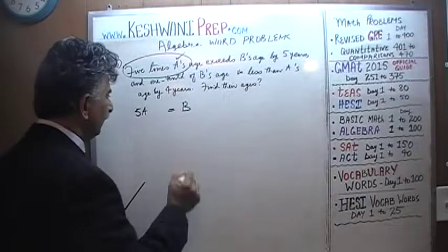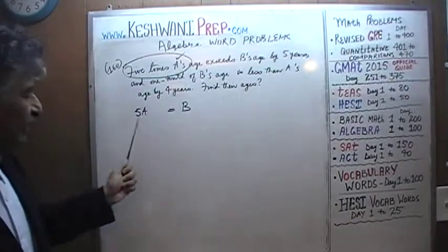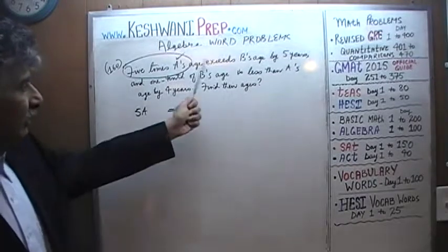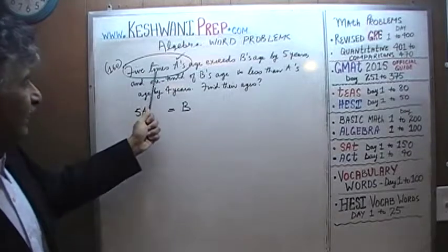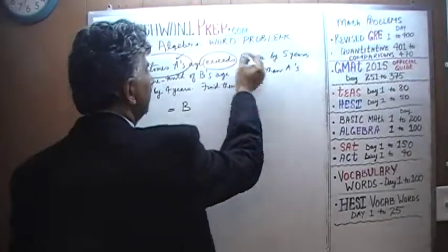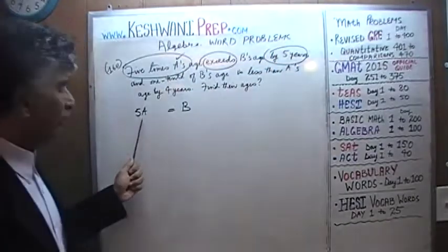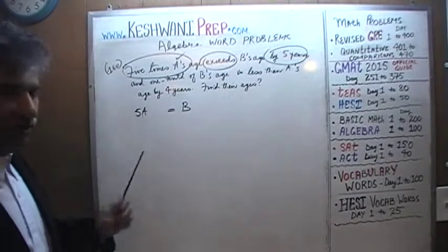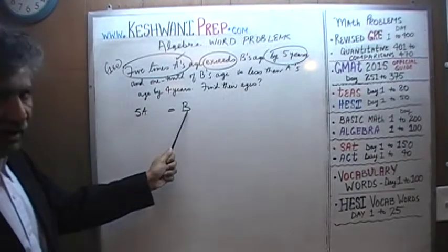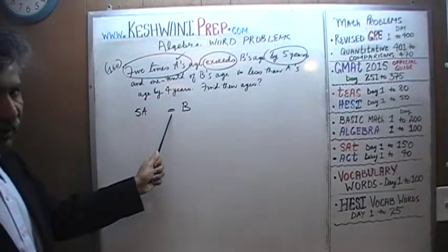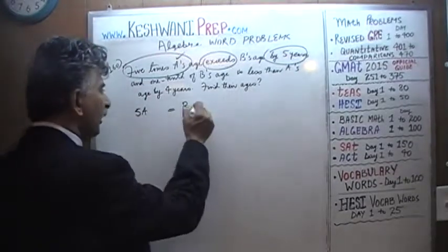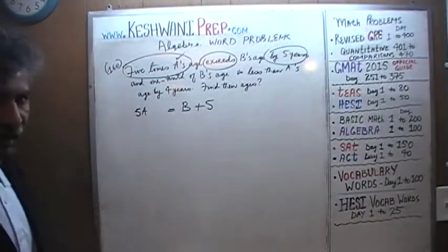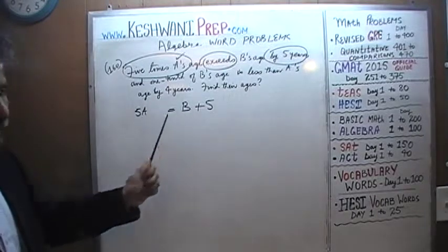Is this equation correct? The way it's written, it says that 5 times A's age equals B's age. That's not what it says. It says 5 times A exceeds B's age by 5 years — in other words, this quantity exceeds that quantity by 5. There are two ways we can fix this. If we want an equal sign, we can add 5 to B, because this exceeds B by 5, so now they are equal.